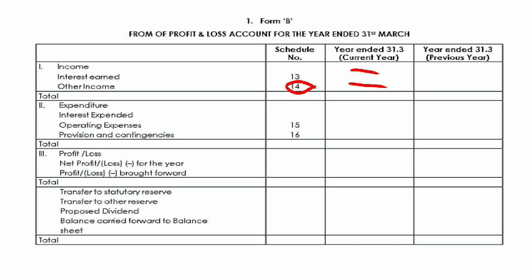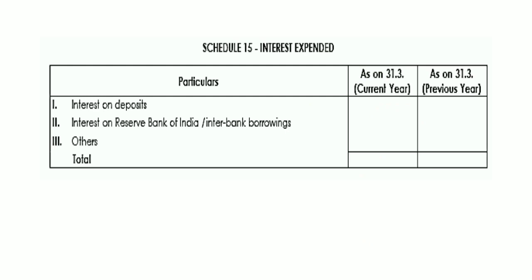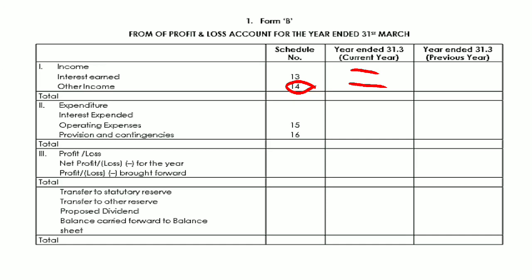Schedule 15 is Interest Expended. If a bank has public deposits, the interest paid on those is recorded here. Then interest paid to the Reserve Bank of India and interbank borrowings — if there is a shortage in the bank, it borrows from RBI or other banks and pays interest on that. All these are totalled to give the total interest expended.